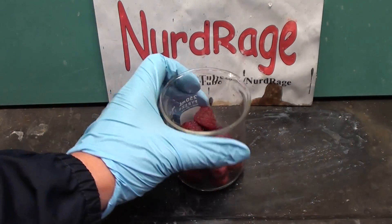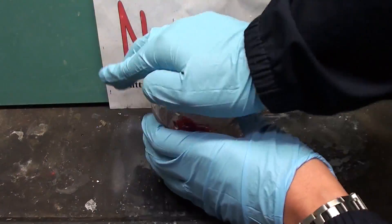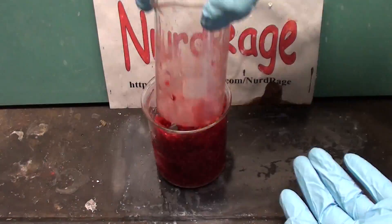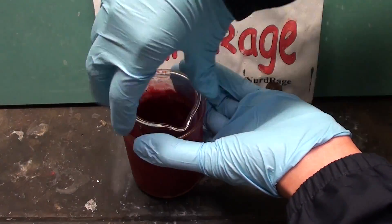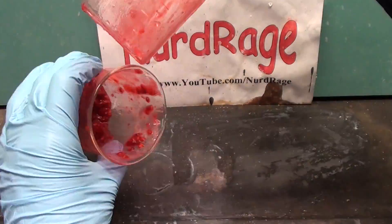In the meantime get some fresh raspberries and crush them into a pulp. You'll need real raspberries, not raspberry flavored juice as only the real stuff has the dye we need. Blackberries also work.